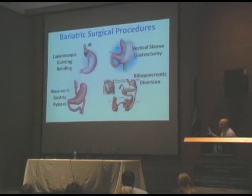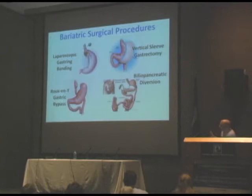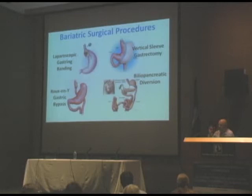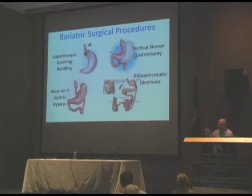I haven't included gastric balloons and some of the newer endoscopic devices, but we can mention those in discussion at the end. There are four main procedures. The first is laparoscopic gastric banding, where a tight elastic band is put around the proximal stomach with a tube that goes up and sits under the skin. Usually after a few weeks, the band is gradually inflated by injecting water into the device to produce more restriction — basically until it starts inducing a little nausea or vomiting.